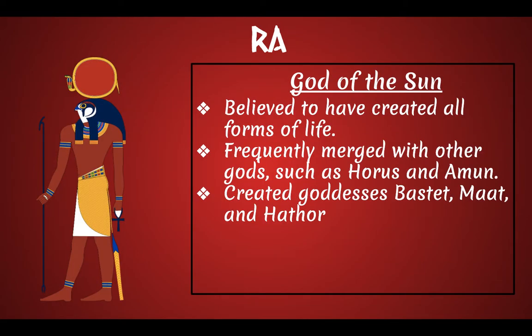The first god we're going to talk about is the god of the sun. His name is Ra and he's first because he created everything. He is believed to create all forms of life. He is frequently merged with other gods such as Horus and Amun, and we'll talk about his merging with those guys when we talk about those two. He also created the goddesses Bastet, Mott, and Hathor.